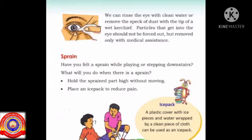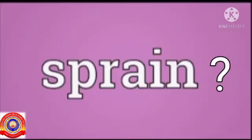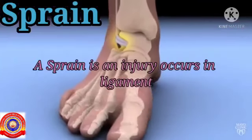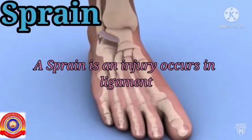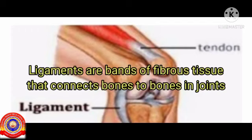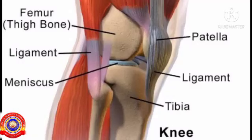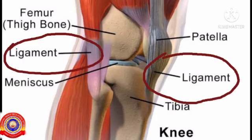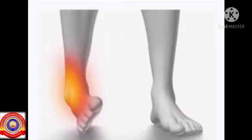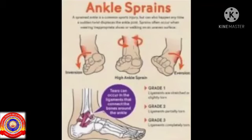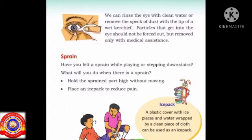The next topic is sprain. Did you know what a sprain is? A sprain is an injury that occurs in a ligament. Ligaments are bands of fibrous tissue that connect bones to bones and joints. The fibrous tissue you see in this picture are called ligaments — we can see that the ligament is connecting two bones. So, once more: what is a sprain? Sprain is an injury that occurs in a ligament.